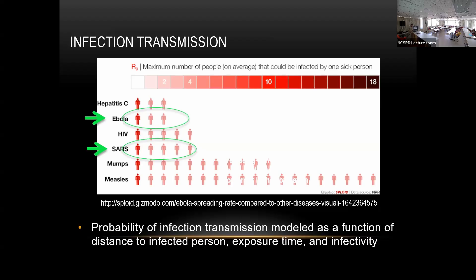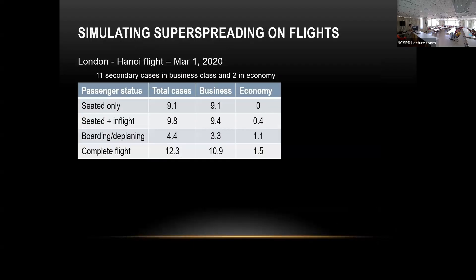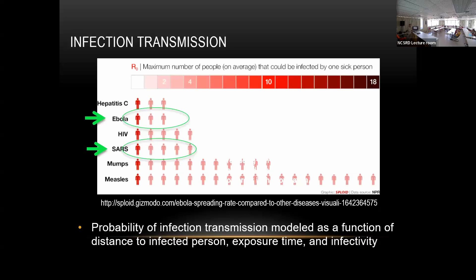SARS was somewhere in the middle, and COVID is basically a variant of SARS. At the initial time of COVID, we didn't know our parameters, so we looked at what might happen with SARS and tried to predict infection risk. Later we got the COVID model. We measure the probability of infection transmission as a function of distance to the infected person, exposure time, and infectivity.